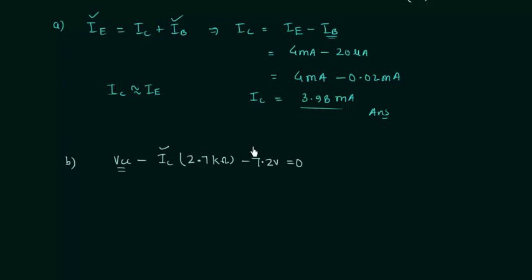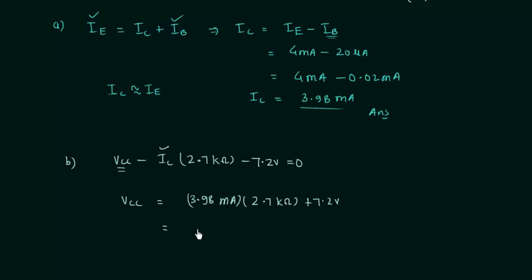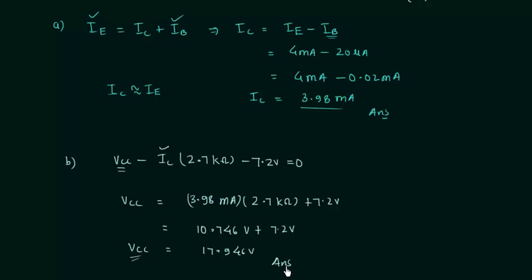From this equation we can calculate VCC since we know IC equals 3.98 milliamps. So VCC equals 3.98 mA multiplied by 2.7 kilo ohms plus 7.2 volts, which gives 10.746 volts plus 7.2 volts, giving a final value of 17.946 volts as the biasing potential VCC. This is the answer to Part B.